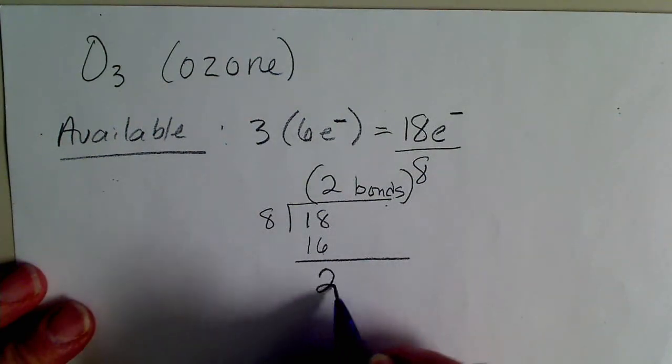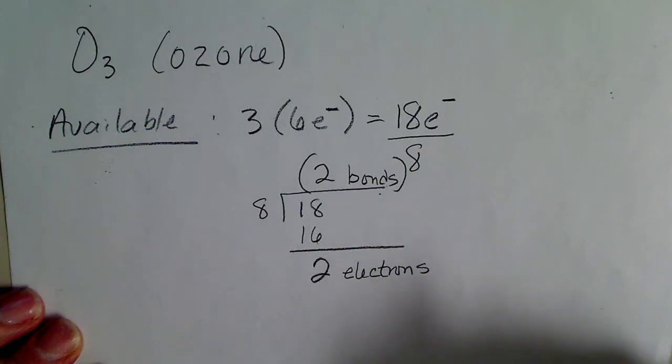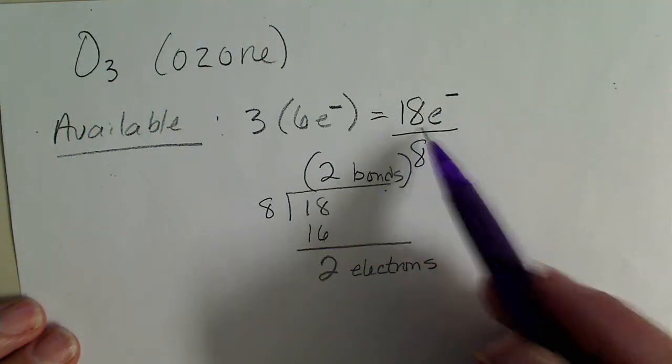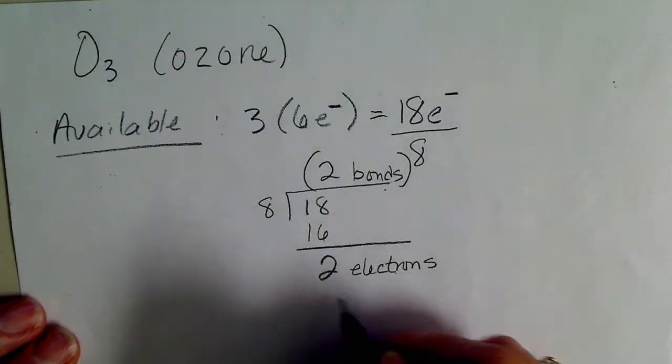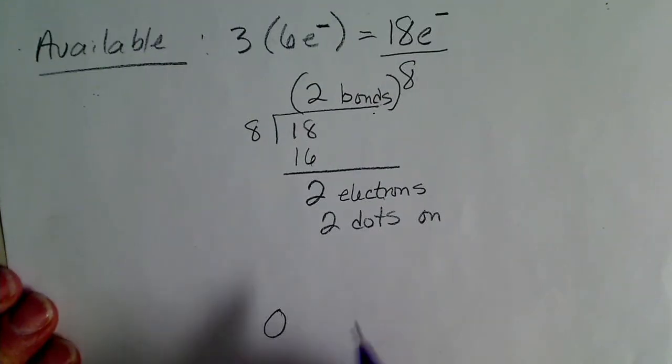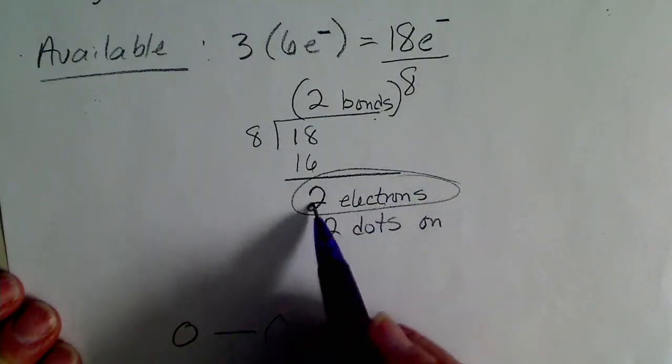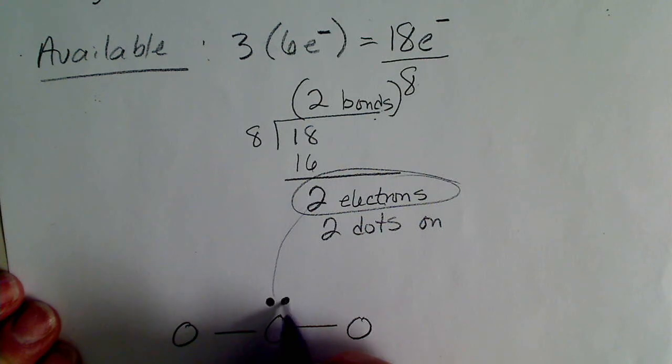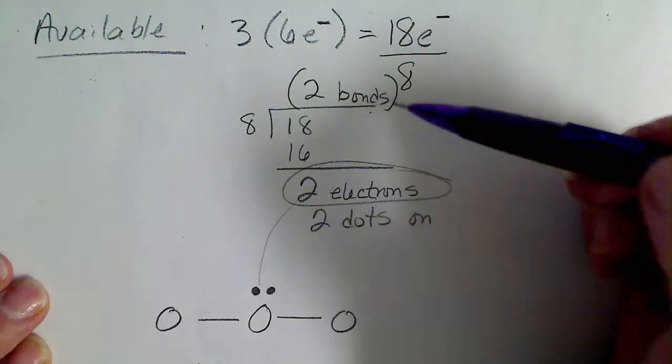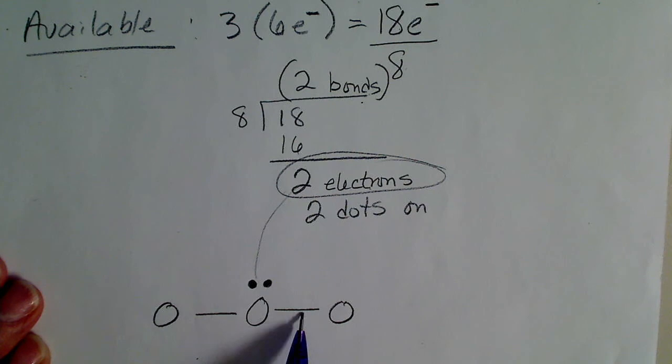The remainder is the number of electrons on the central atom. That's a very quick way to get the central atom's environment. If we take the available, divide by eight, the remainder are going to be the number of dots on the central atom. All three of these are oxygen. If we put our oxygen here and connect the other oxygens to that, the remainder of two electrons shows up here. We still have to know something about the octet rule. This gives us two bonds and two dots, a lone pair on the central atom, but our oxygen still is not happy. There's two, four, six electrons around it.